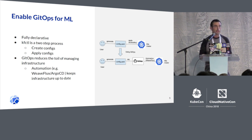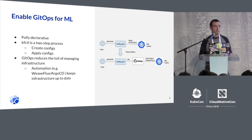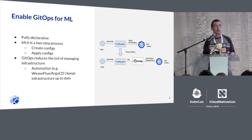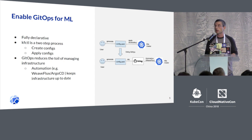The reason this pattern is called GitOps is because you can basically operate your infrastructure just by pull request. If you want to make a change, you just change the config file, push it to your Git repo, and then the tools take care of automatically syncing that change to your infrastructure.